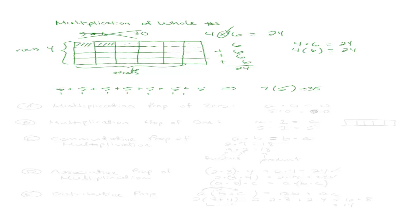Let's put out some of the rules of multiplication. First, the multiplication property of 0. The multiplication property of 0 says that if you take any number A times 0, your answer is going to be 0. If you think about it, that makes sense. For example, 5 times 0 would be 0.